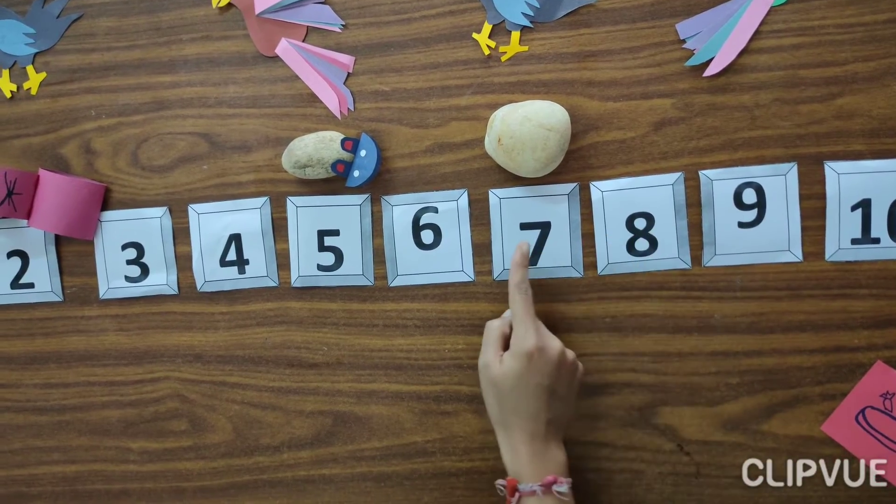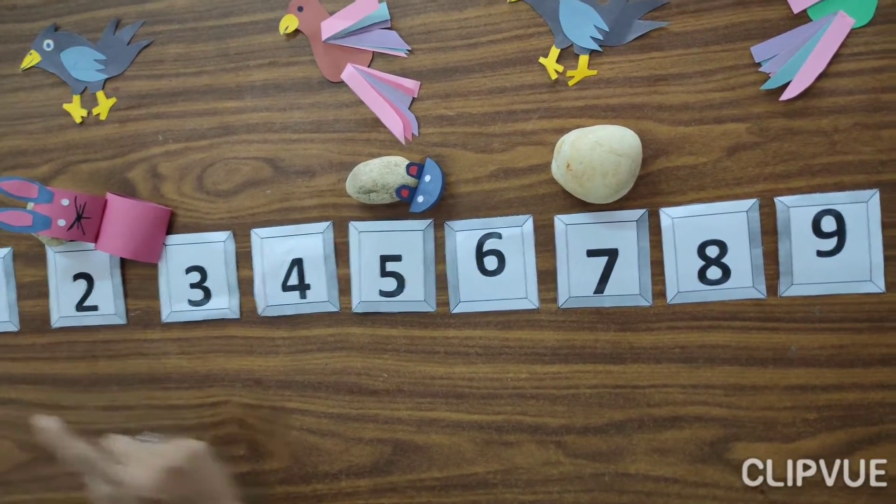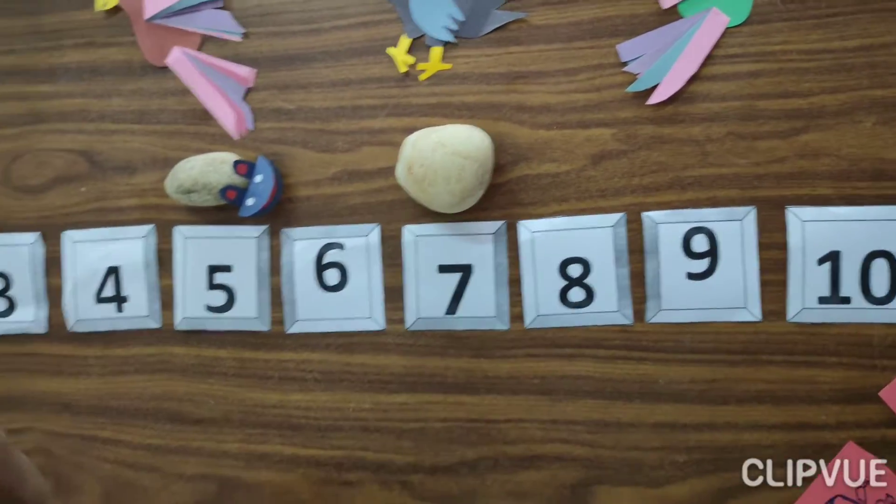10, 9, 8, 7, 6, 5, 4, 3, 2, 1. It is called backward counting.